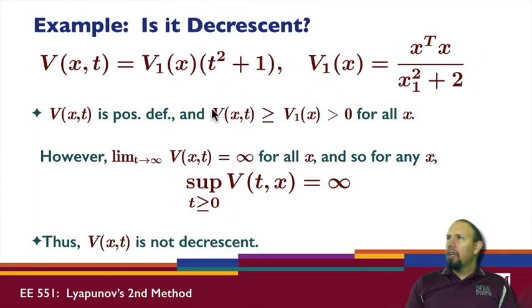The limit, however, of this expression is infinity for all x. And so for any x, the supremum is infinite. And so we see that V is not decrescent. So this concept of decrescency is really important in being able to establish the stability for time varying systems.